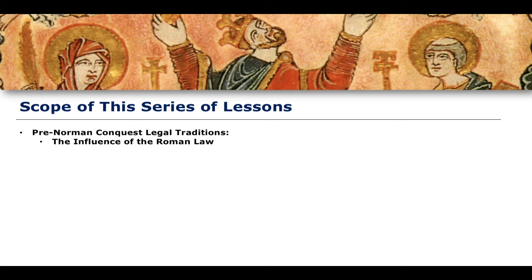We're going to start even further back by talking about the influence of Roman law and the Romans being part of Britain's history. That is the first of the two pre-Norman Conquest legal traditions we will explore. The second is the Anglo-Saxon legal system — the legal system of people like Alfred the Great, Æthelred the Unready, King Cnut, Edward the Elder, and others. This is really even before England as we know it today existed. It was King Æthelstan who formally unified the heptarchy into the country of England. Prior to that, we're not even talking about England — which goes to show how law develops over time. The law is older than the country it governs.